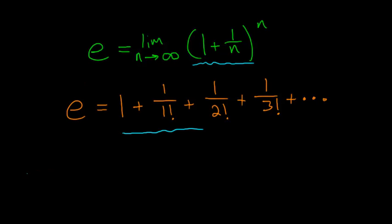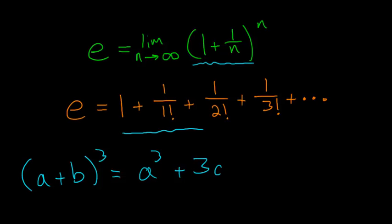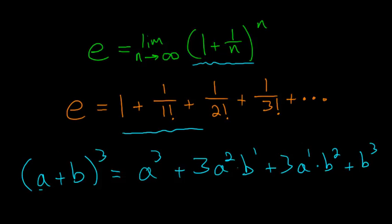If you've forgotten how to expand a binomial, it's fairly simple. Let's say I have a plus b to the third power. My first term would be a to the third, then I add 3 times a squared multiplied by b to the first. Plus 3 times a to the first times b squared, plus b to the third power. The leftmost term starts at the power the binomial is raised to and counts down by 1 each term, while the right term starts at b to the 0 and counts up to the exponent — in this case 3.